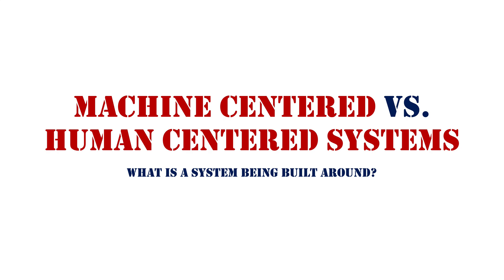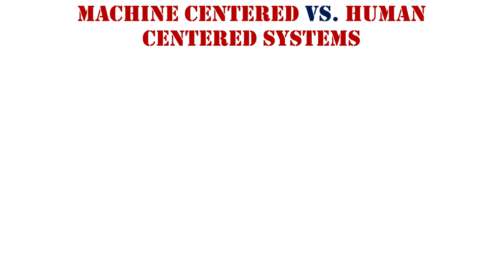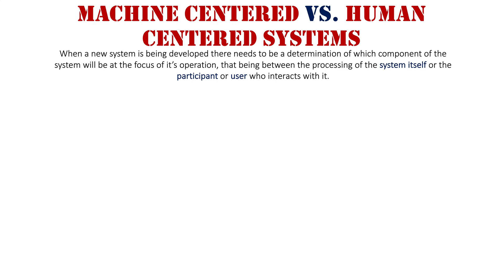Machine-centered versus human-centered systems. When a new system is being developed, there needs to be a determination of which component of the system will be the focus of its operation — that being between the system itself or the participant or user who interacts with it.